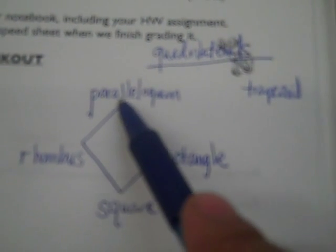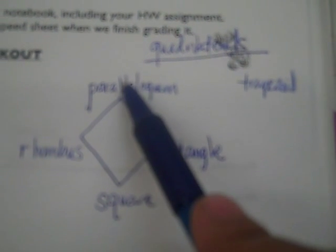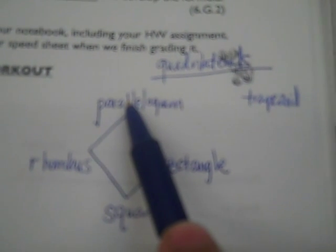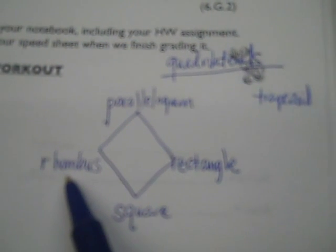The word 'parallelogram' contains two L's, so you can think of it as having two pairs of parallel lines. If it just has two pairs of parallel lines, it's a parallelogram. If it has two pairs of parallel sides and all sides are the same length, then it is called a rhombus.